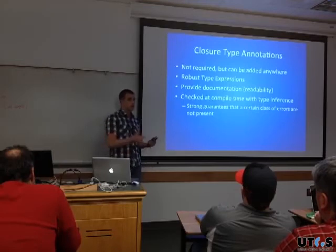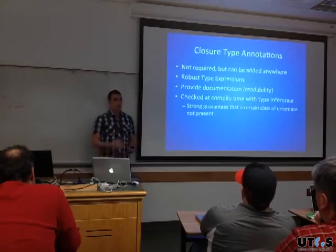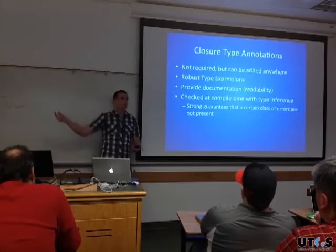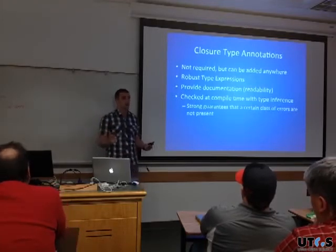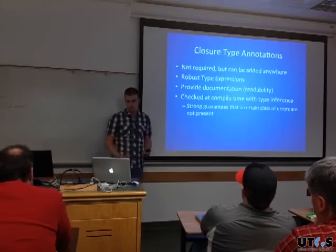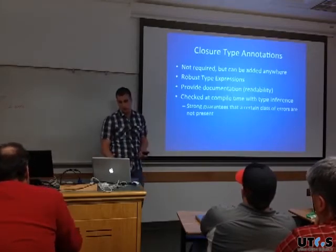You can add type annotations anywhere inline — you can do casting using comment markup, telling the compiler to treat a variable as an array. You can do these annotations all over your code to make it stable. The documentation benefit is also nice: anyone coming along looking at your code knows exactly what that function expects and what types those should be.